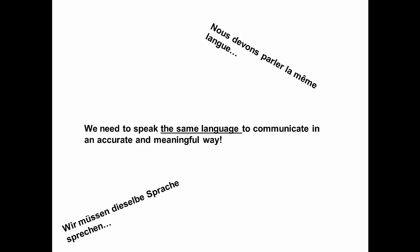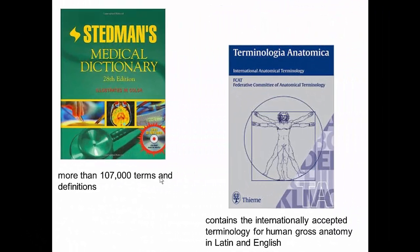We need to speak the same language to communicate in an accurate and meaningful way. There are several medical dictionaries containing over 100,000 terms and definitions used in medicine and anatomical sciences. It is especially important that medical and scientific communities throughout the world use the same name for each structure. The Terminologica Anatomica supersedes all previous lists and contains the internationally accepted terminology for human topographical anatomy, including neuroanatomy, in both Latin and English — a truly international and scientifically based attempt to identify a best term for each structure.